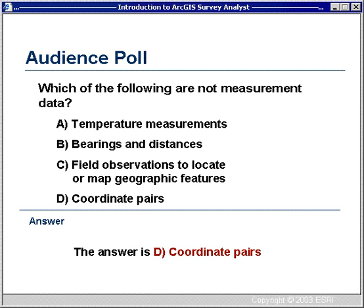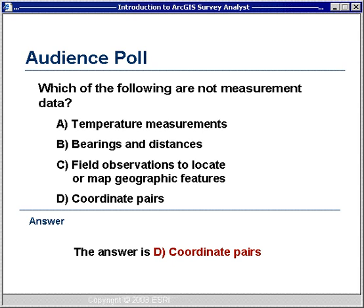Let's review the polling results. About 35% of the audience did not consider temperature measurements as measurement data, when in fact temperature measurements are measurement data — atmospheric conditions affect measurements in the field. Temperature is collected to improve the quality of final results; it affects tape measurements. Bearings and distances are measurements. Field observations to locate or map features are measurements. Coordinate pairs were selected by about 36% of the audience, but a coordinate pair represents measurements — coordinates are computed or derived from measurements. If you had two sets of coordinate pairs, you could compute a bearing and distance between them, which would be measurement data.